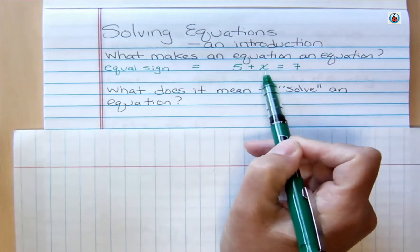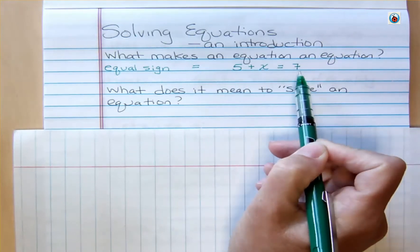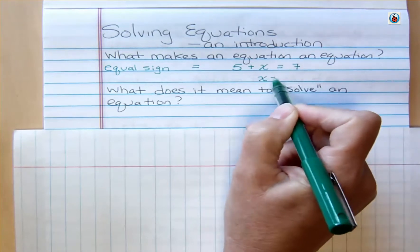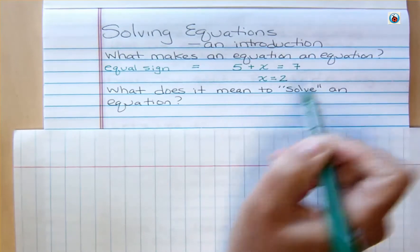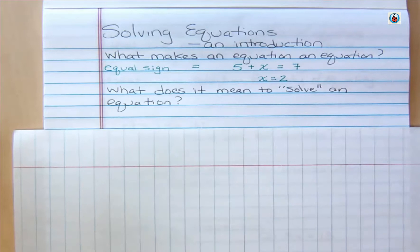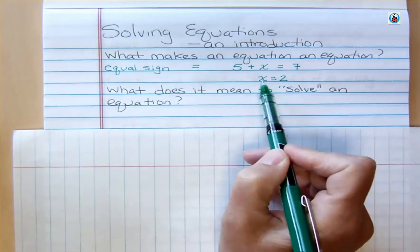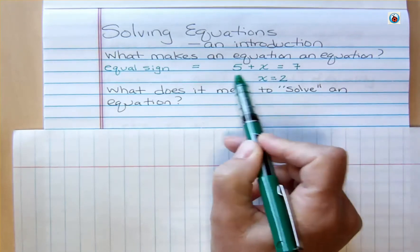...if I have 5 and I'm adding something and it equals 7, what do I have? Well, in that case, x would equal 2. And that's solving that equation because what I'm saying is, in this equation, I have discovered what my variable equals. My variable equals 2 in this scenario.